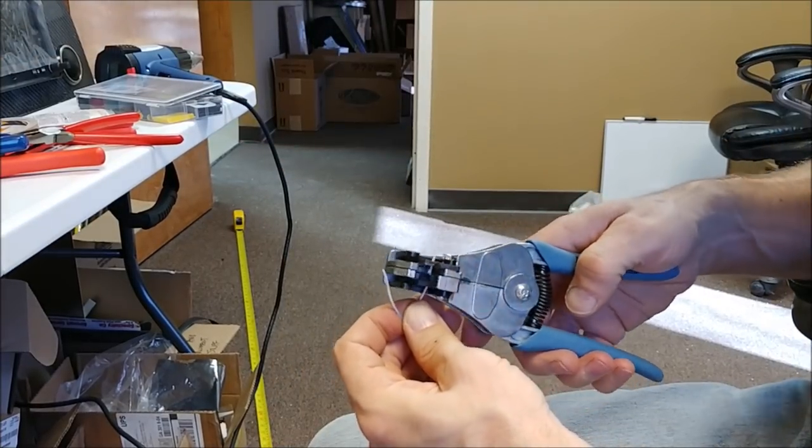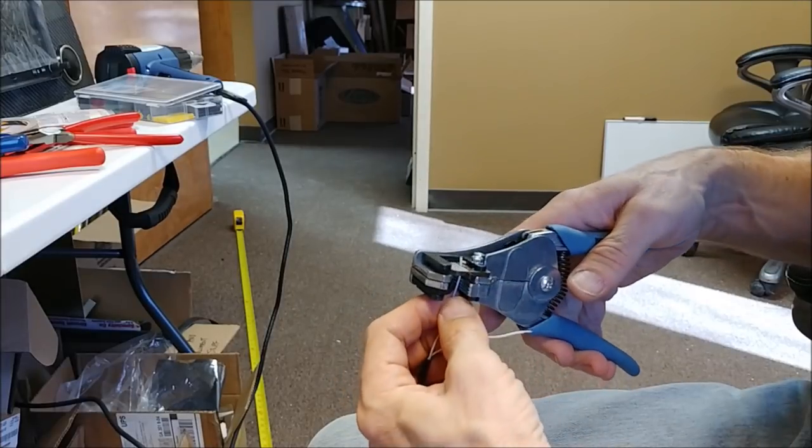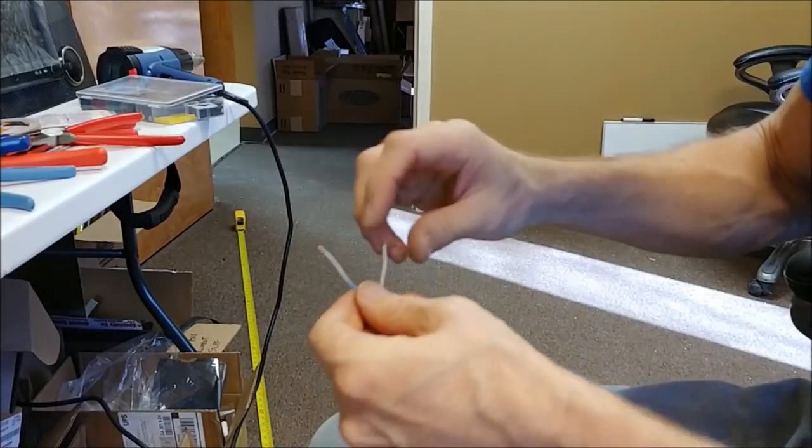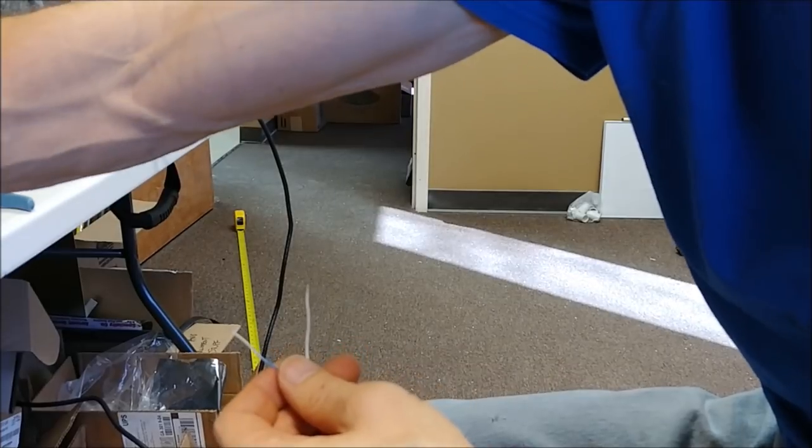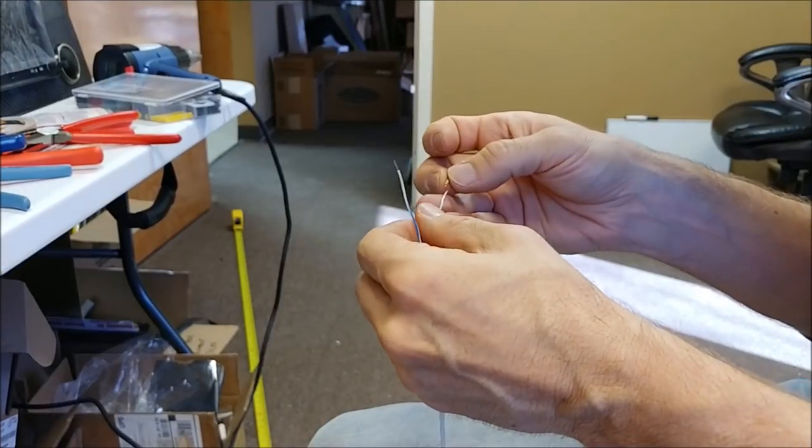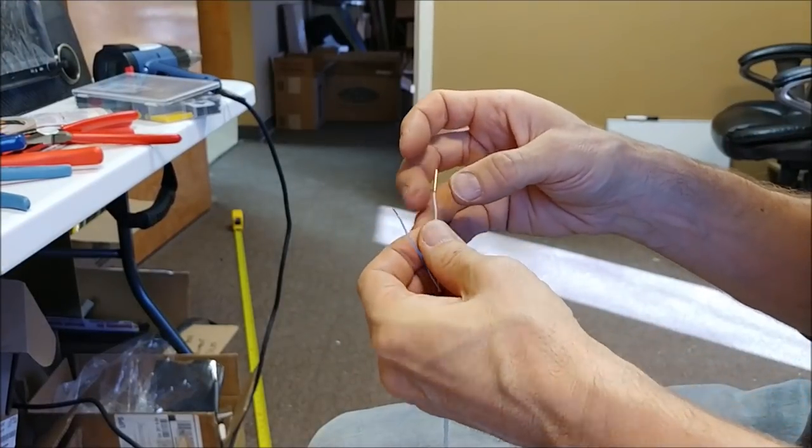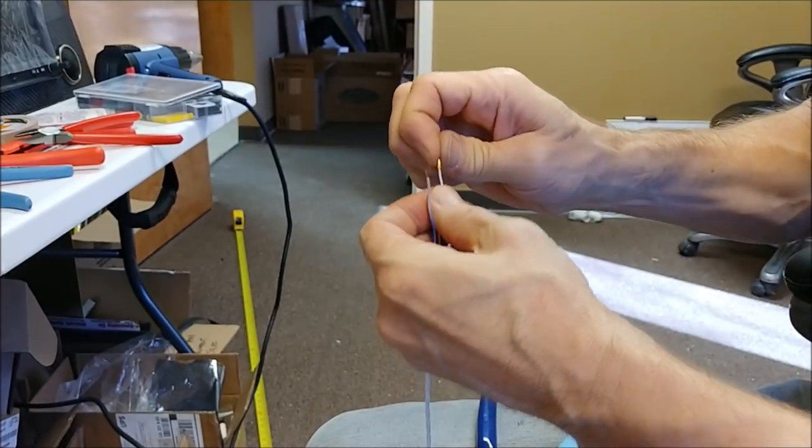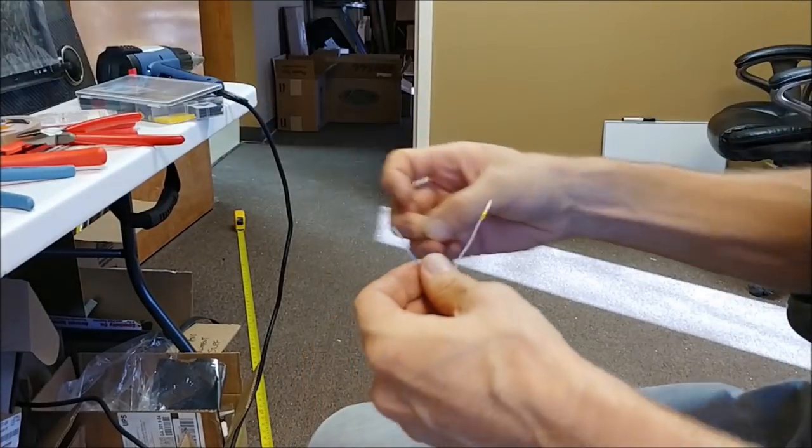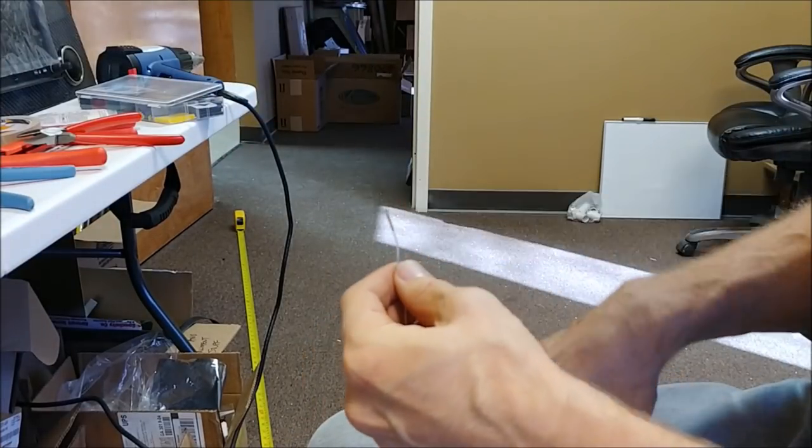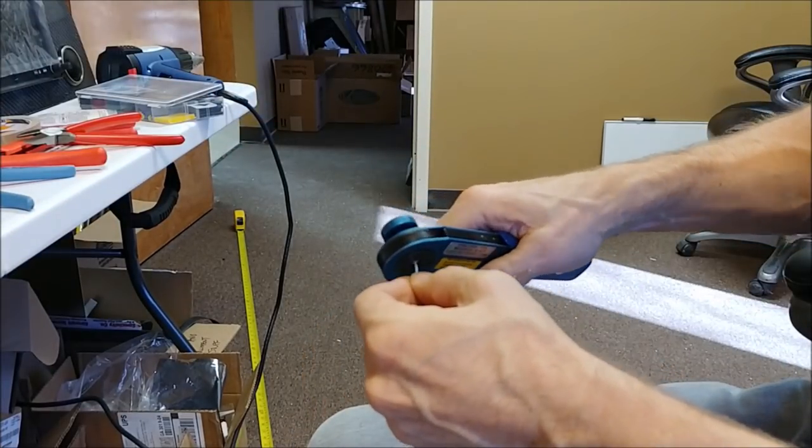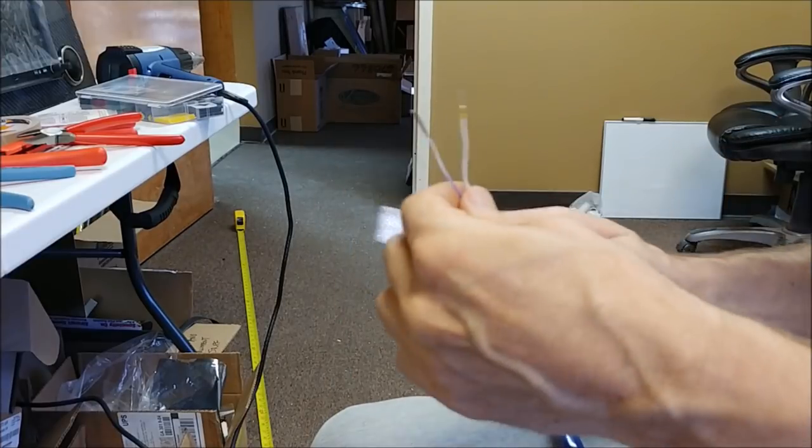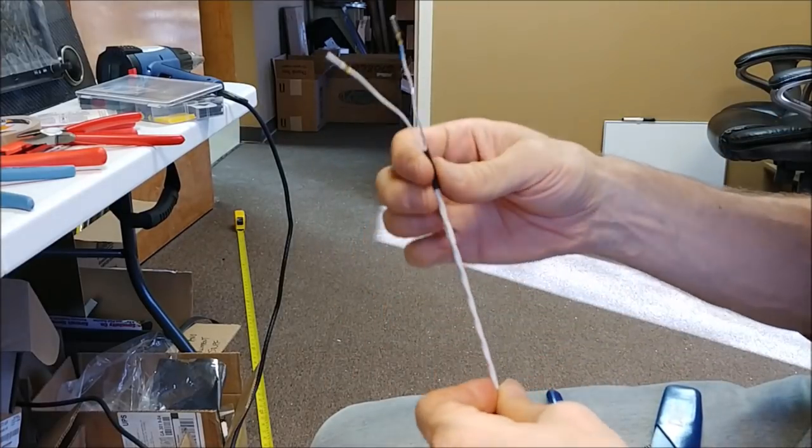Just bare the wires there, then you've got these little crimp-on connectors. The special tool goes over that, and you give it a couple squeezes. It crimps it and it's not going to come off. It puts a really good connection on there, and those are gold connectors, so they're really good quality.